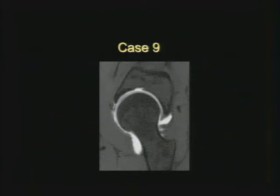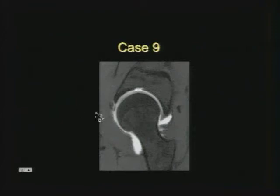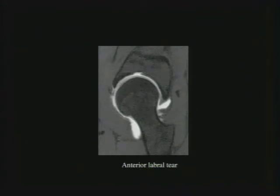Case nine is a hip on MR arthrogram in the sagittal plane. The labra come off the anterior and posterior acetabulum; there's cartilage on the acetabulum and femoral head with a normal break in the middle. On T1 fat-sat to bring out dilute gadolinium, we see high signal in the labrum. On the sagittal image, high signal in the front means the anterior labrum — a classic location for a labral tear.